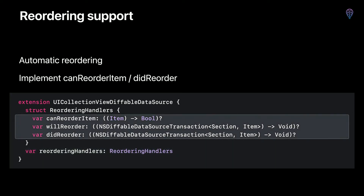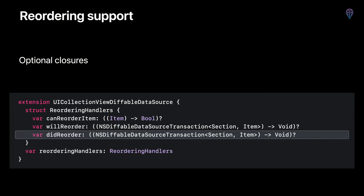reorderingHandlers is a struct containing three optional closures: canReorderItem, willReorder, and didReorder. To enable reordering, you first supply a canReorderItem closure, which is called when a user attempts to start a reordering interaction — if it returns true, reordering is allowed to begin. When the user completes the interaction, the didReorder closure is called to allow your application to commit the new reordering state to your source of truth. Note: you must provide both the canReorderItem and didReorder closures to enable the reordering feature.